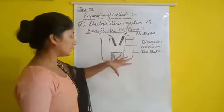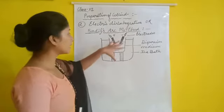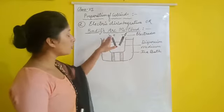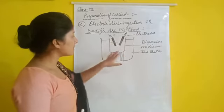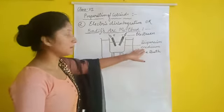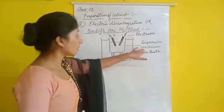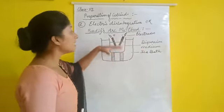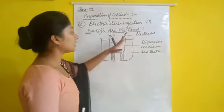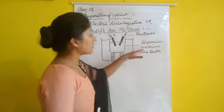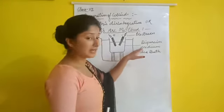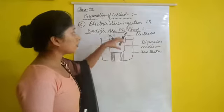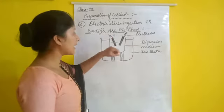In the Bredig arc process, an electric spark is struck between electrodes which are immersed in the dispersion medium. The electrodes are made of metal, and the electric spark is introduced between these metal electrodes while they are dipped in the dispersion medium.